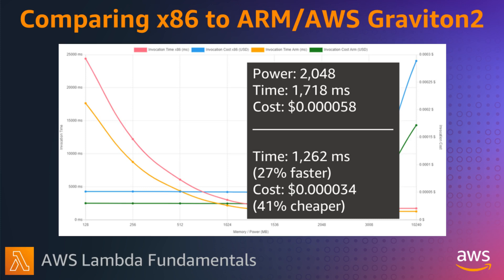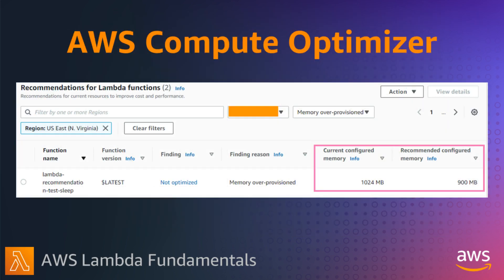PowerTuner is a very helpful tool to give you the right memory configuration for your real-life workloads. Another way to manage the efficiency of your Lambda functions is by using the AWS Compute Optimizer. This is more of a passive approach — you turn on Compute Optimizer and it looks at your function invocations over a few days and uses machine learning algorithms to make recommendations about changes that you can make to improve performance and cost. In this example, it's recommending reducing memory from 1 GB to 900 MB. Reducing the memory configuration reduces the gigabyte-per-second cost of Lambda. It's important to find the sweet spot between your Lambda function duration and the memory configuration to find where cost is most optimal.